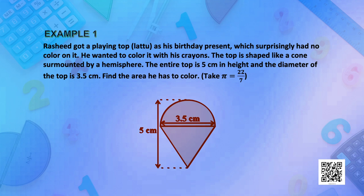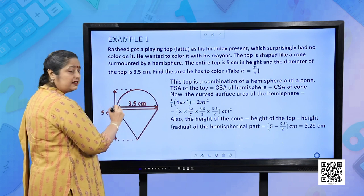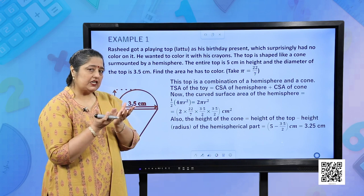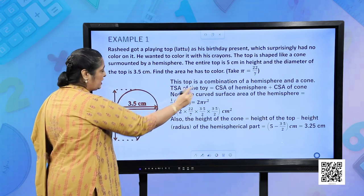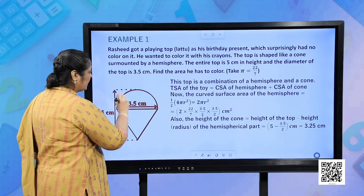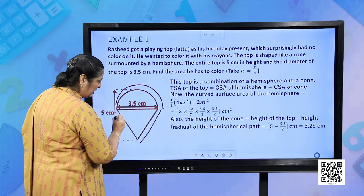Example 1: Rashid got a plain top (Lattu) as his birthday present and wanted to colour it with crayons. The top is shaped like a cone surmounted by a hemisphere. The entire top is 5 centimetres in height and the diameter of the top is 3.5 centimetres. Find the area he has to colour, taking π = 22/7. The total surface area of the toy is the CSA of the hemisphere plus the CSA of the cone.